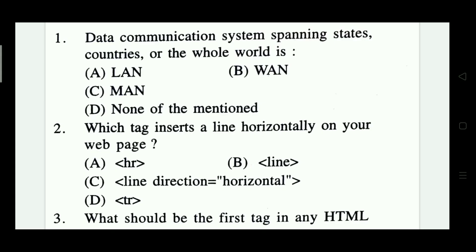Question 1: A data communication system spanning states, countries, or the whole world is called a WAN — World Area Network. Option B is the correct answer.